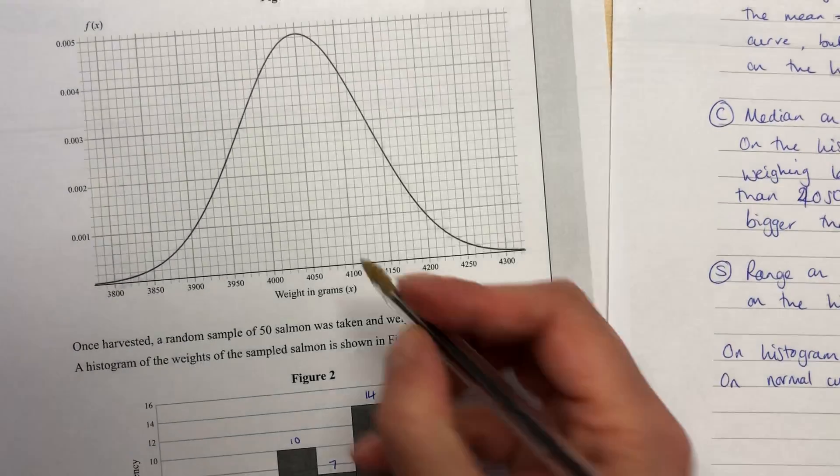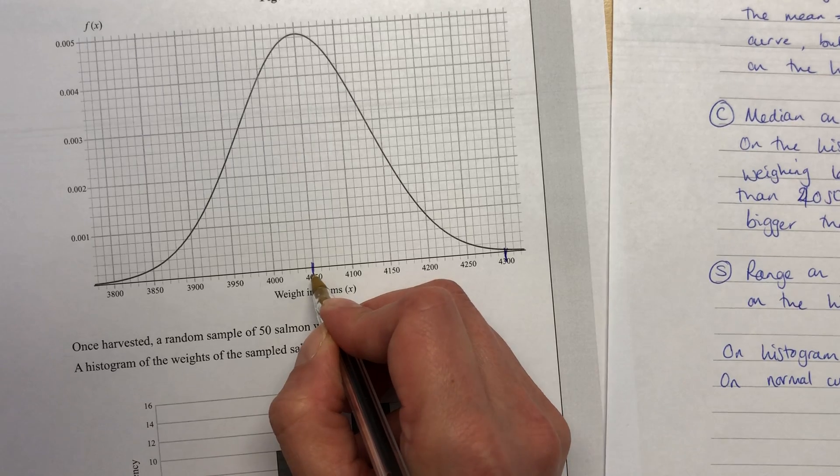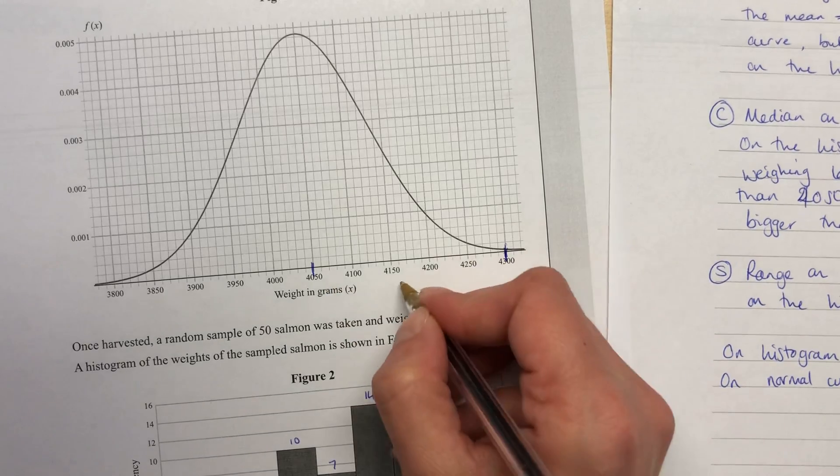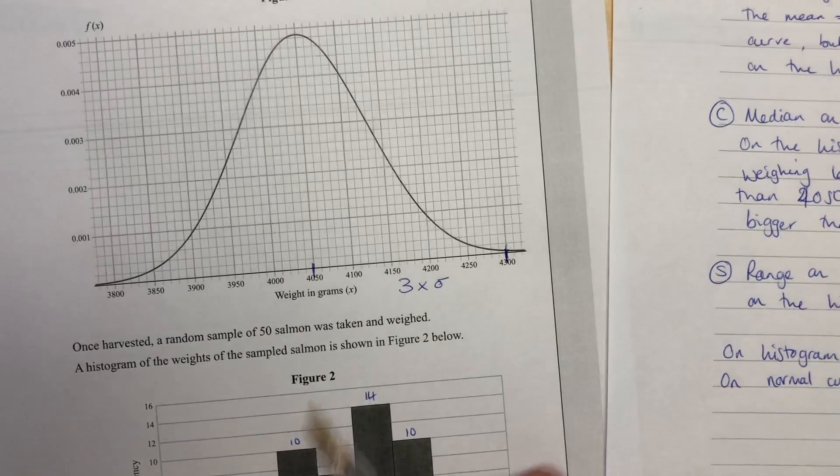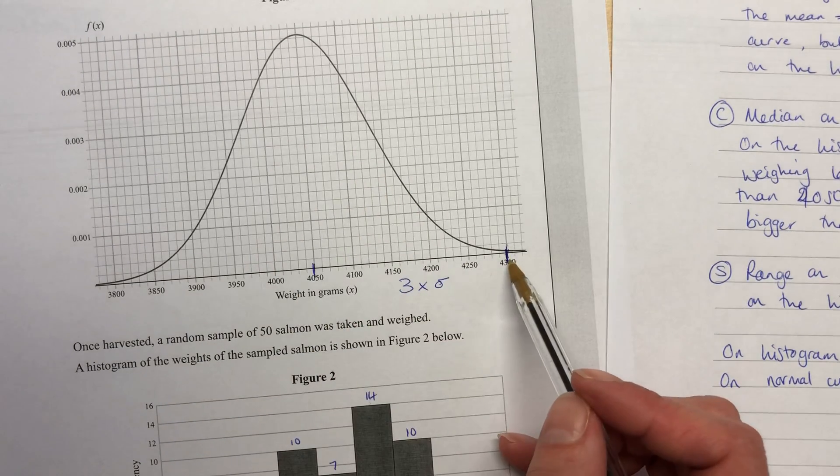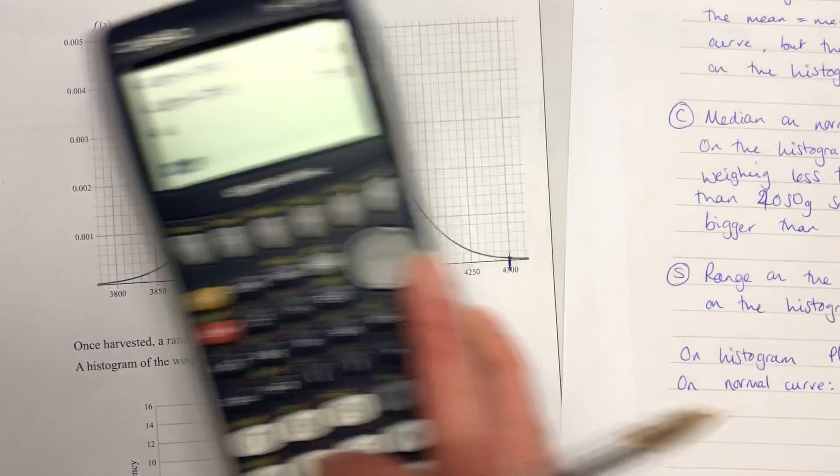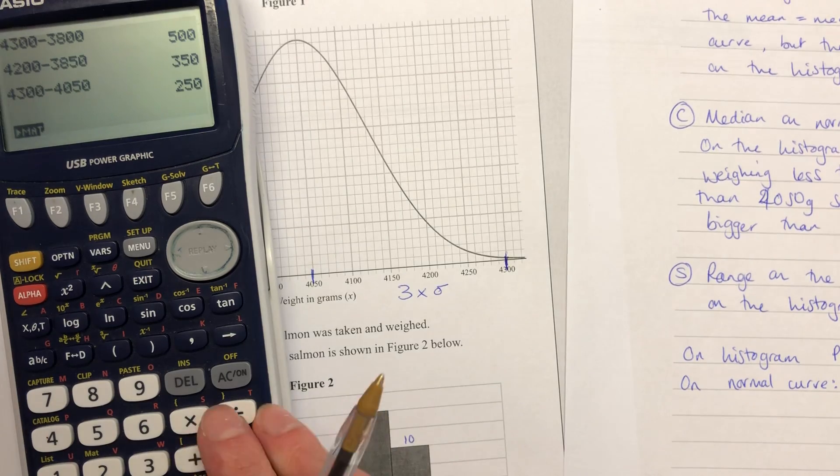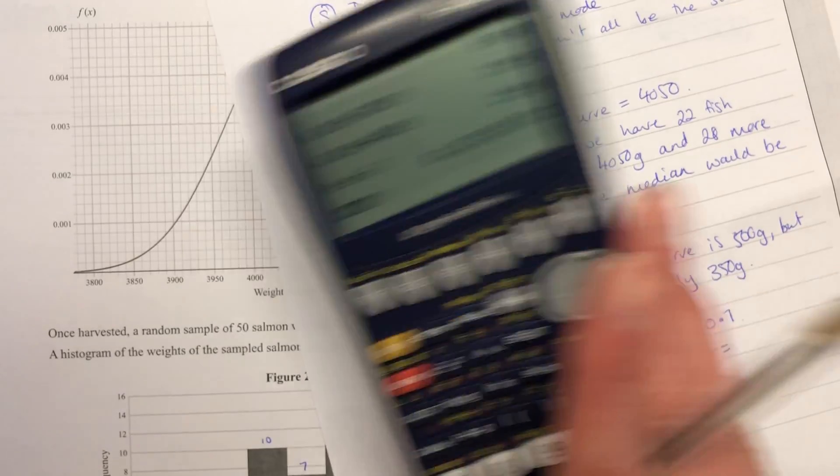But we also need to estimate what the standard deviation would be. Now, standard deviation, you can estimate off of this curve by taking this distance here from the median or the mean out to the upper edge. That should be worth three standard deviations. So our normal curve has this property that almost all of the results occur within three standard deviations of the mean. So if I go for that 4,300 and I take away the 4,050, that gives me a gap of 250. Now, divide that by three and sigma would have to be around about 83.3.